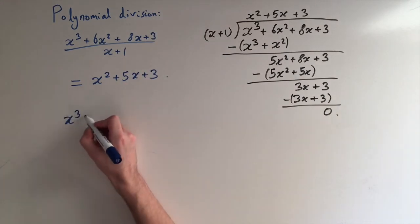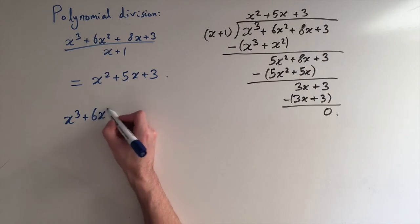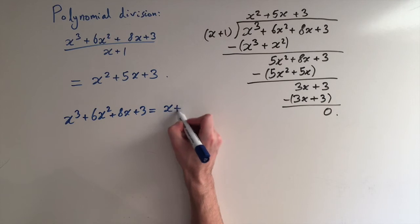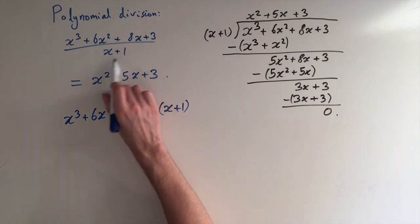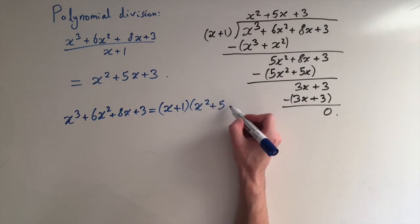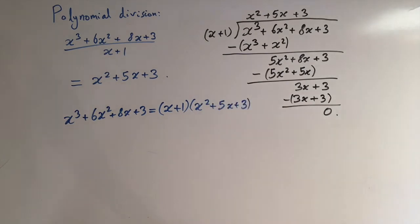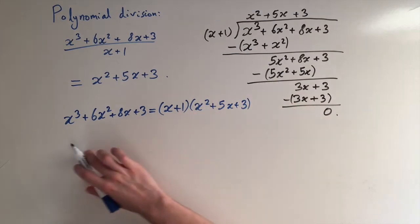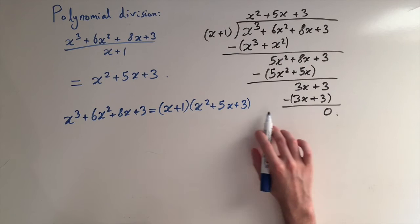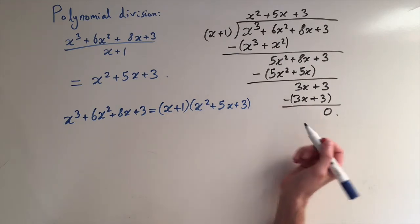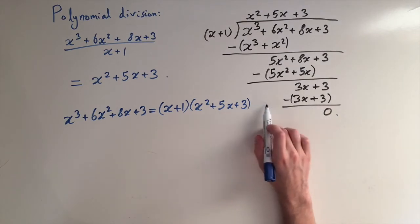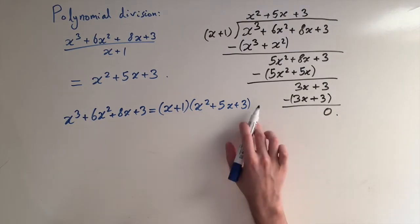It tells us that x cubed plus 6x squared plus 8x plus 3 equals x plus 1 times the answer we got, which is x squared plus 5x plus 3. So this method of dividing has told us how to factorize this cubic. Since we got a zero remainder it factorizes perfectly. We're now going to look at another example where the remainder isn't zero.